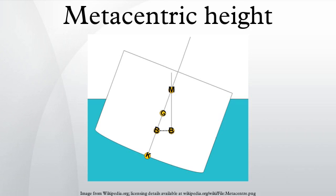The metacentric height is a measurement of the initial static stability of a floating body. It is calculated as the distance between the center of gravity of a ship and its metacenter. A larger metacentric height implies greater initial stability against overturning.